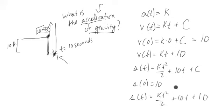Now what is the acceleration of gravity? Well, let's see. I think we have something to help us. We know that at t equals 10 seconds that the position will be at 0. So we have 0 is equal to k times 10 squared, which is 100 over 2, plus 10 times 10 plus 10. All right, so we know that much.